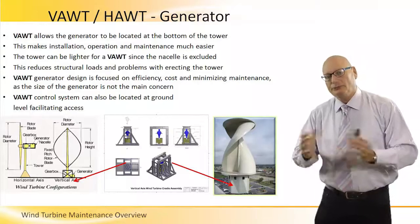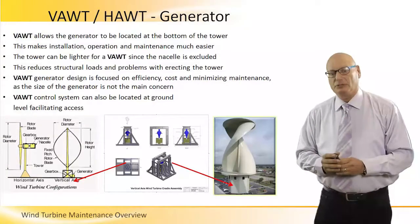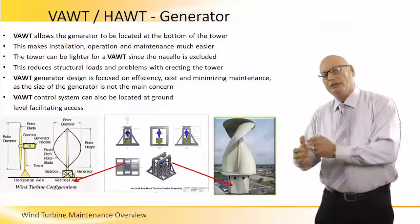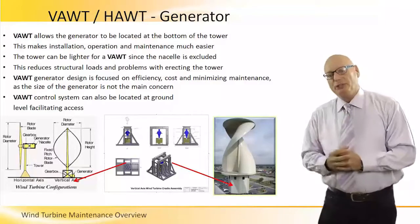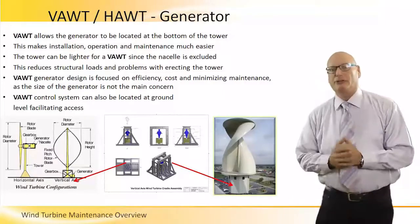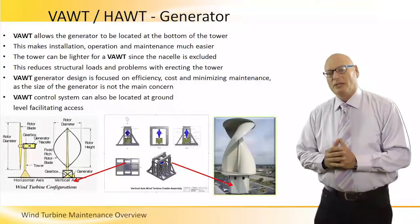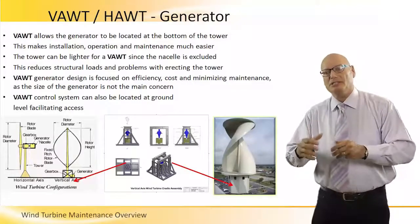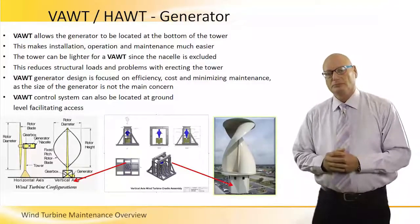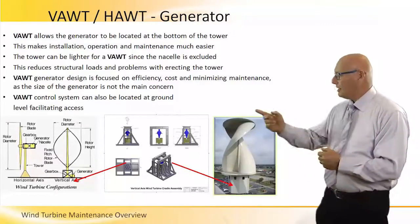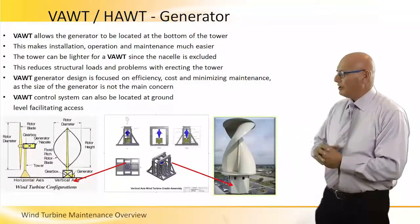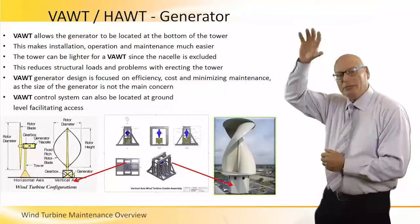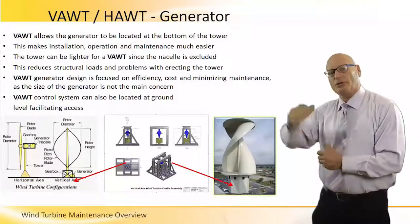Generators — every turbine has its own generator. The key conceptual difference between HAWT and VAWT is that in VAWT the generator is down at ground level, on the bottom of the tower. This makes installation, operation, and maintenance much easier. In the horizontal axis turbine, the generator is up there — sometimes 100 meters high.